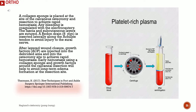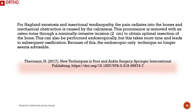A Redon drain is inserted laterally along the Achilles tendon to avoid injury to the sural nerve. After layered wound closure, growth factors are injected into the debrided area and into the osteotomy site to achieve rapid hemostasis. Early hemostasis using a collagen sponge and growth factors around the calcaneal insertion will help to avoid long-term edema formation at the resection site. For Haglund exostosis and insertional tendinopathy, the pain radiates into the bones and mechanical obstruction is caused by the calcaneus. This prominence is removed with an osteotome through a minimally invasive 2 cm incision to obtain optimal bone resection. This can also be performed endoscopically, but this takes more time and leads to subsequent ossification.